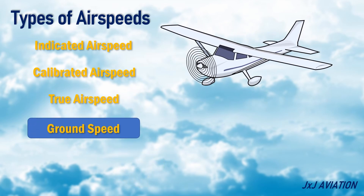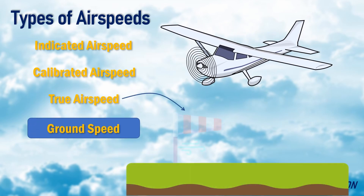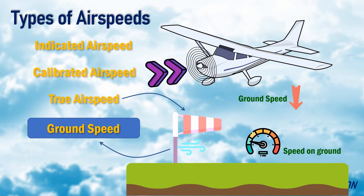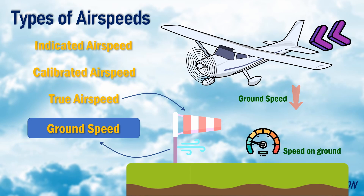Ground speed: the true airspeed adjusted for winds is the ground speed. This is the actual speed of an airplane over the ground. If there are headwinds, the ground speed decreases. And if there are tailwinds, the ground speed increases.